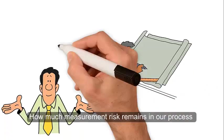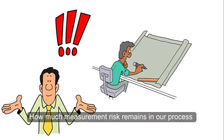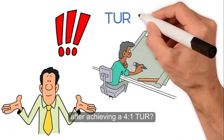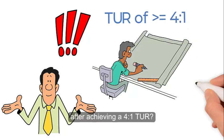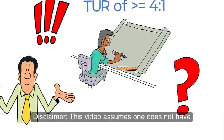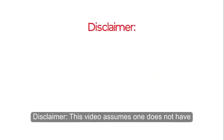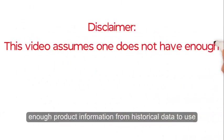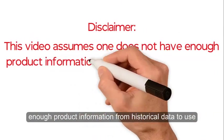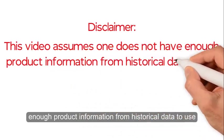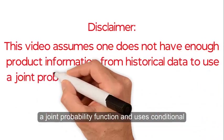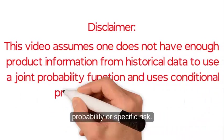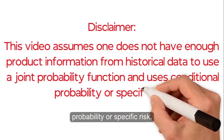How much measurement risk remains in our process after achieving a four-to-one TUR? This video assumes one does not have enough product information from historical data to use a joint probability function, and instead uses conditional probability or specific risk.